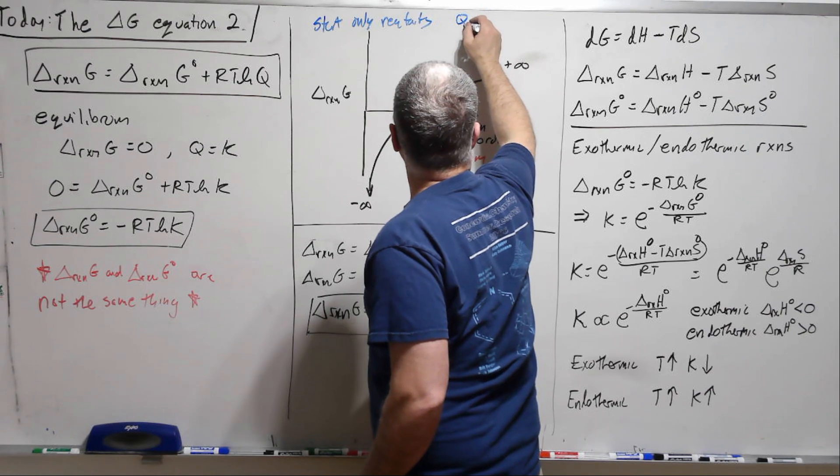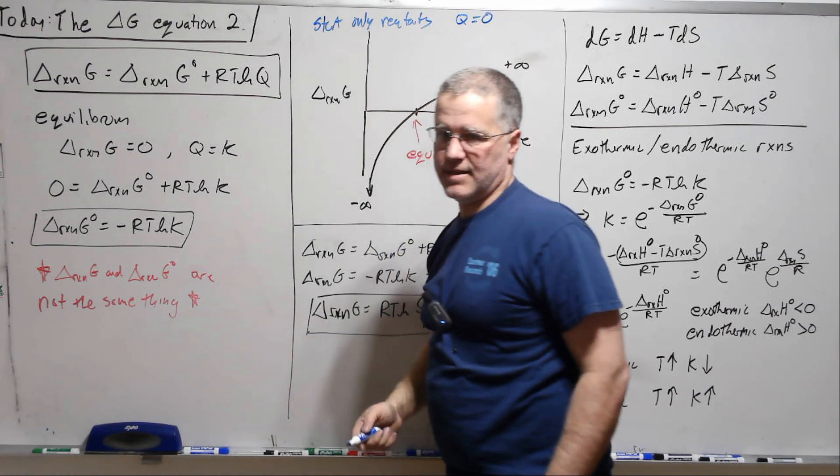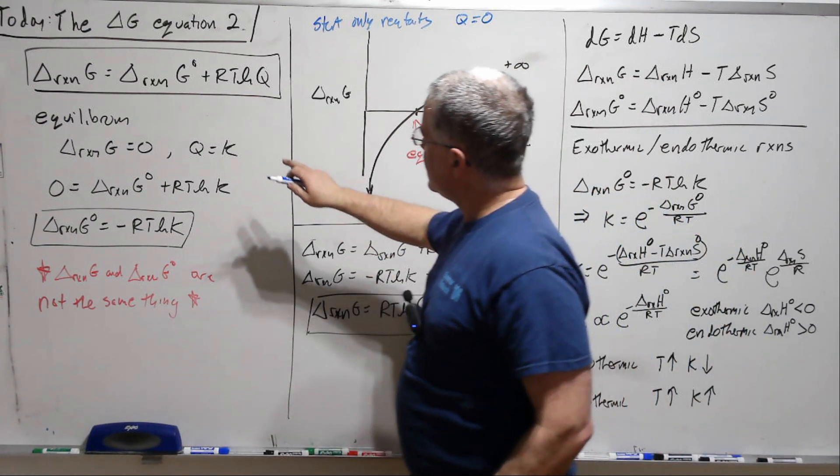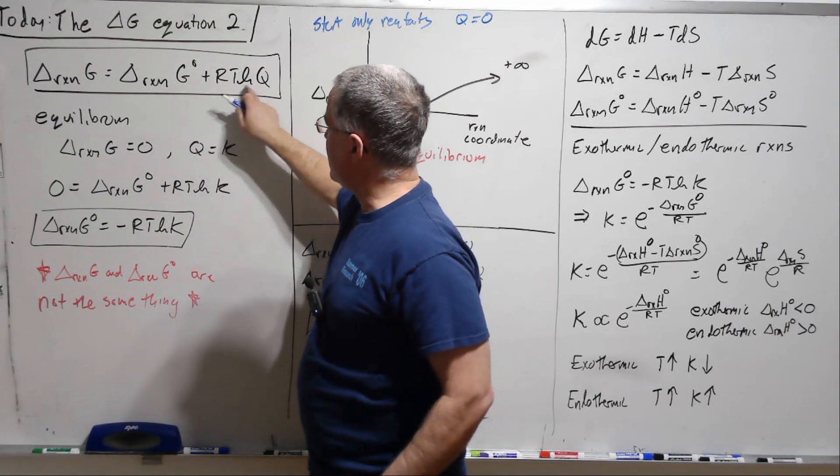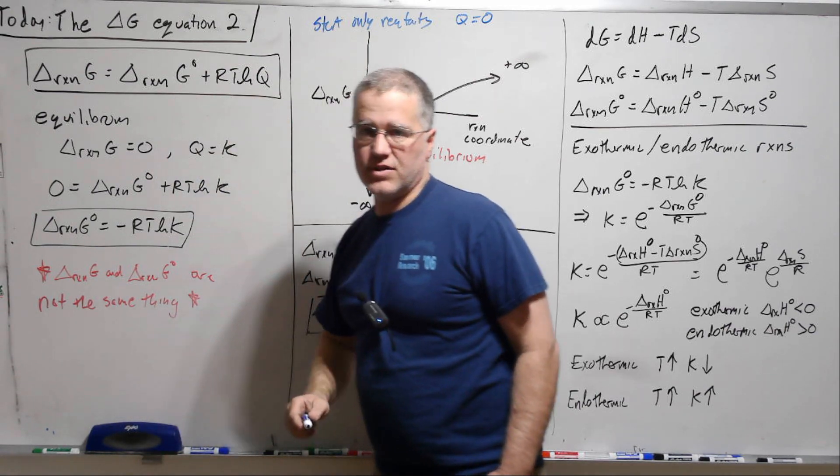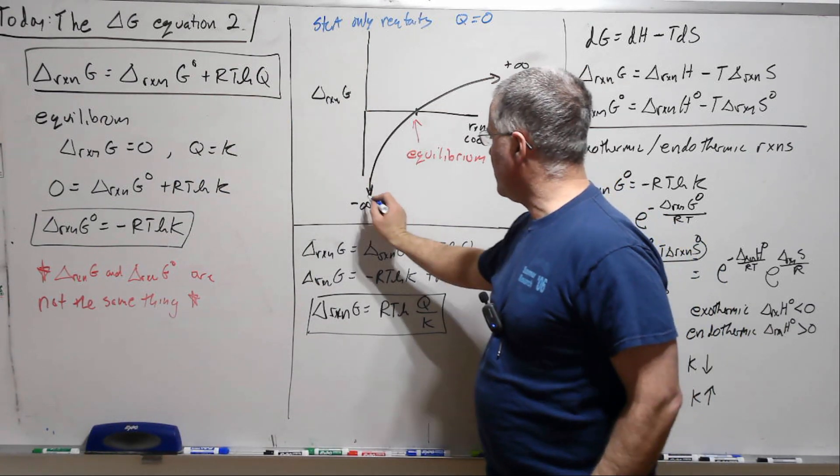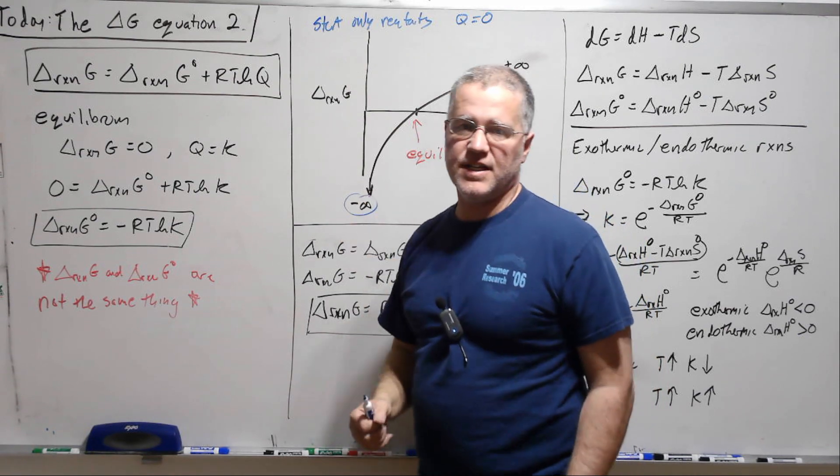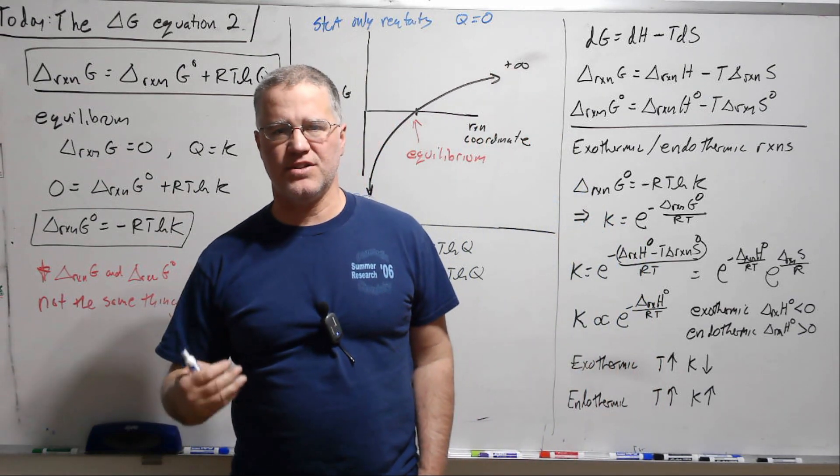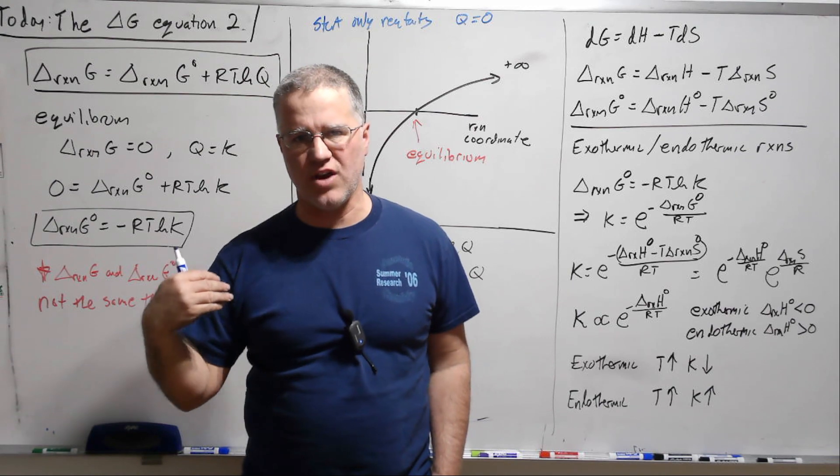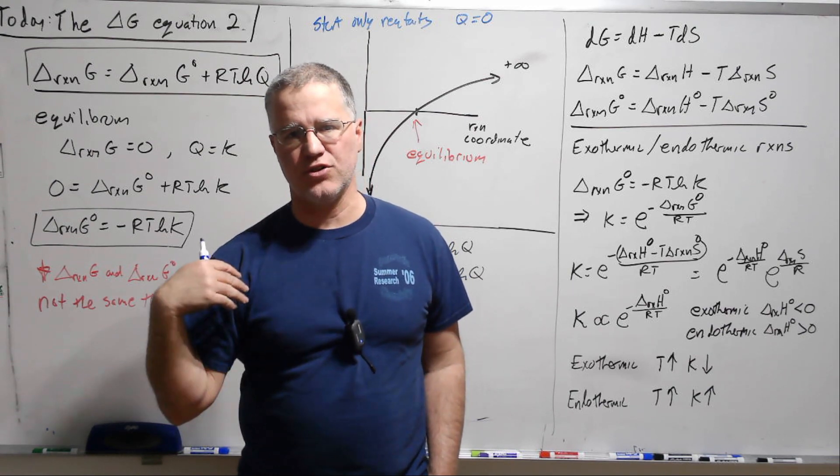So then Q is zero, right? Products over reactants. So it doesn't matter what this is, if Q is zero, log of zero is minus infinity. So we start off with minus infinity, which just indicates that there's a very strong thermodynamic driving force to have the reaction go forward.